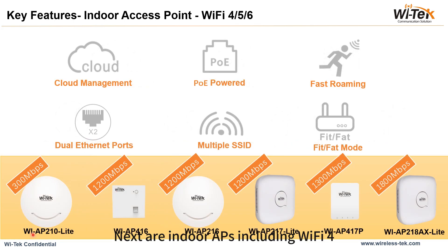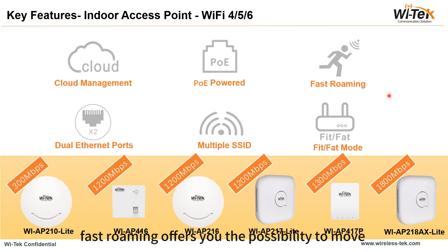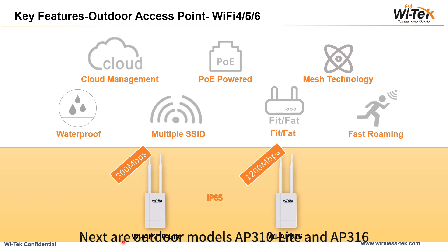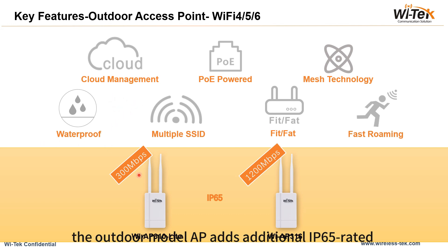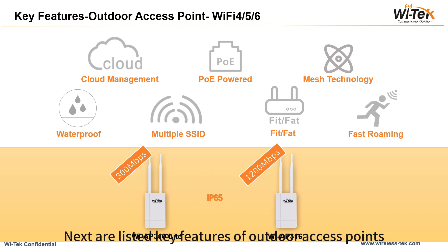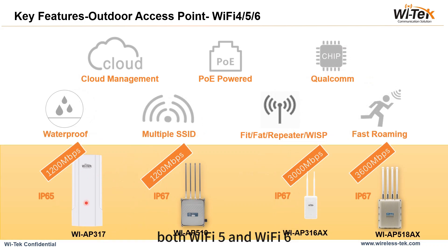The indoor APs including Wi-Fi 4, Wi-Fi 5, and Wi-Fi 6 all support Cloud Management, PoE-powered, and Fast Roaming, which allows movement between APs without re-authentication. Outdoor models AP 310 Lite and AP 316, in addition to those features, add IP65-rated waterproofing and mesh capabilities. Both Wi-Fi 5 and Wi-Fi 6 outdoor access points are covered, with some models providing IP67 waterproofing.